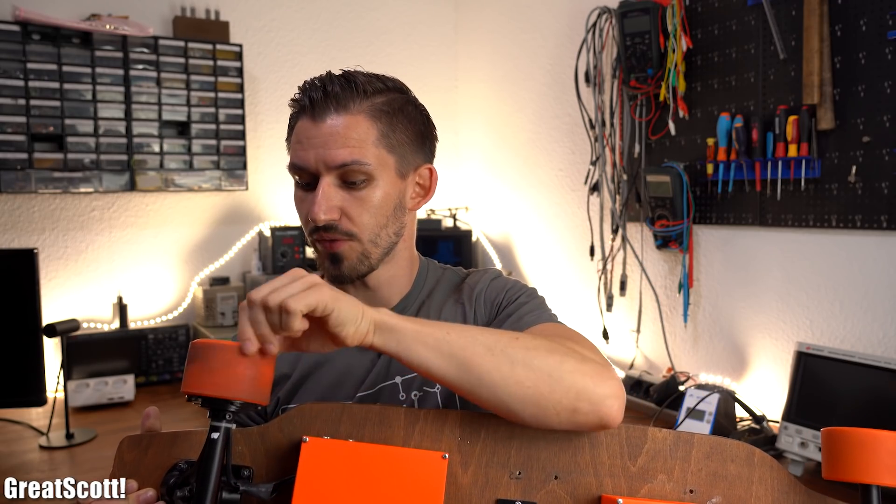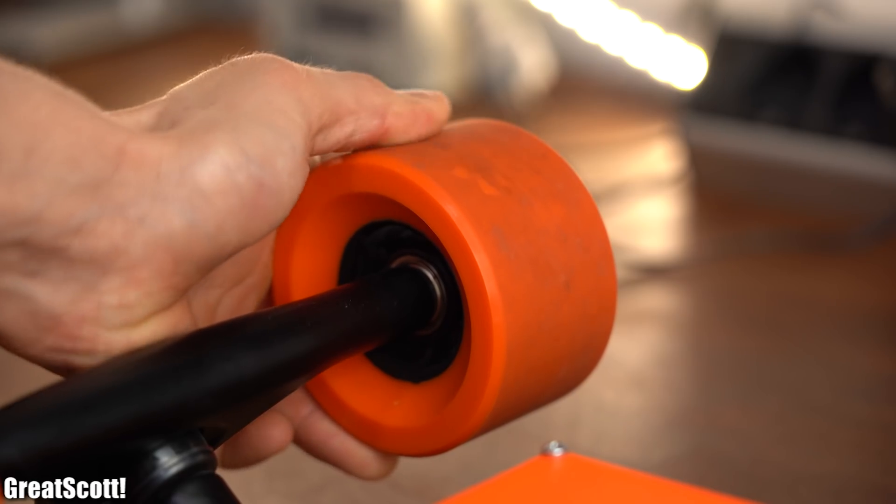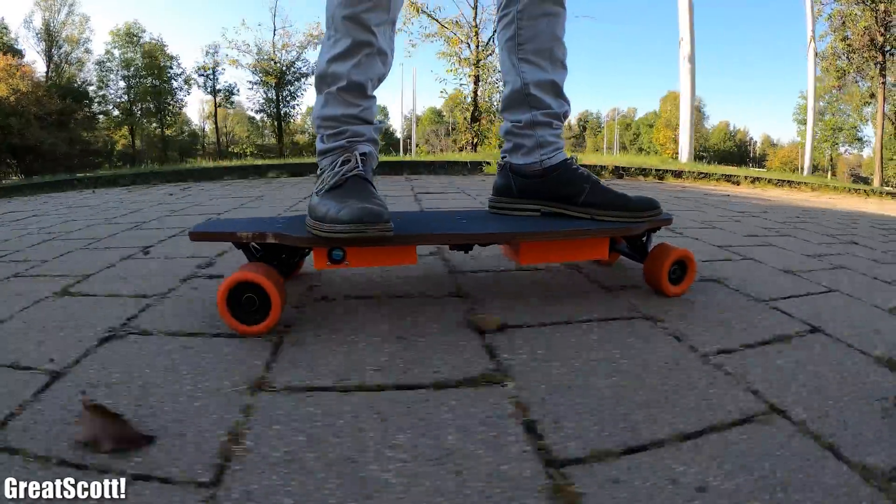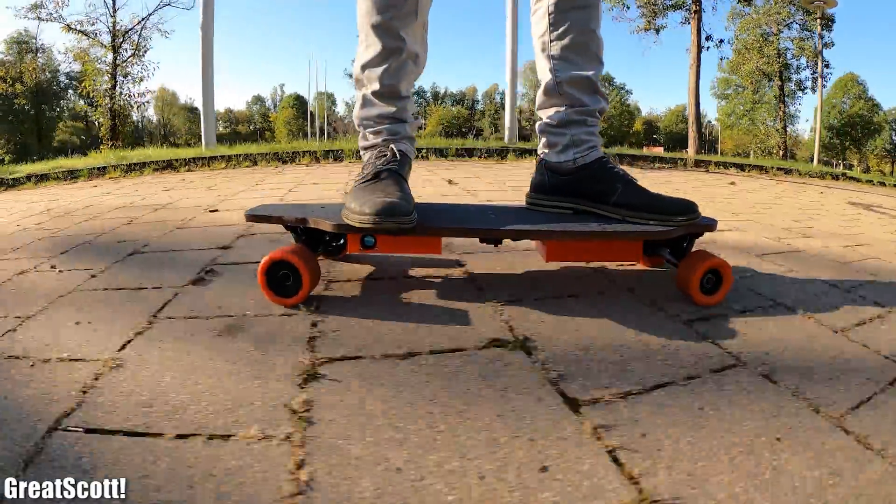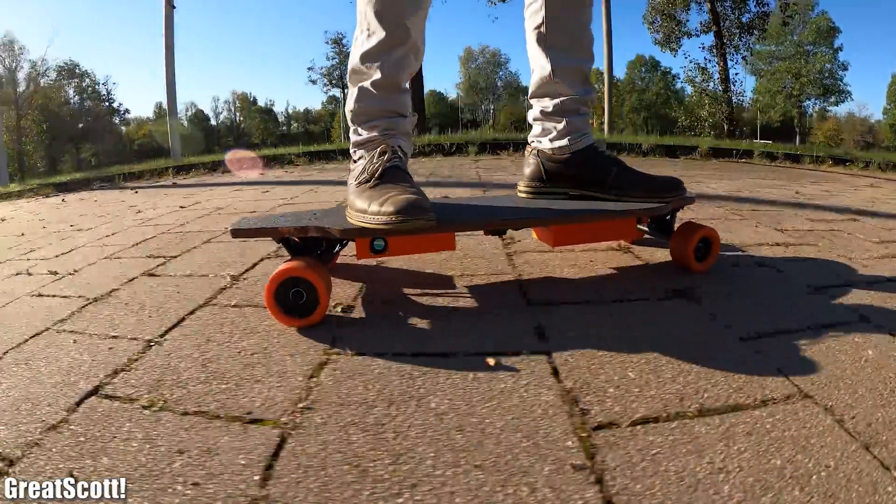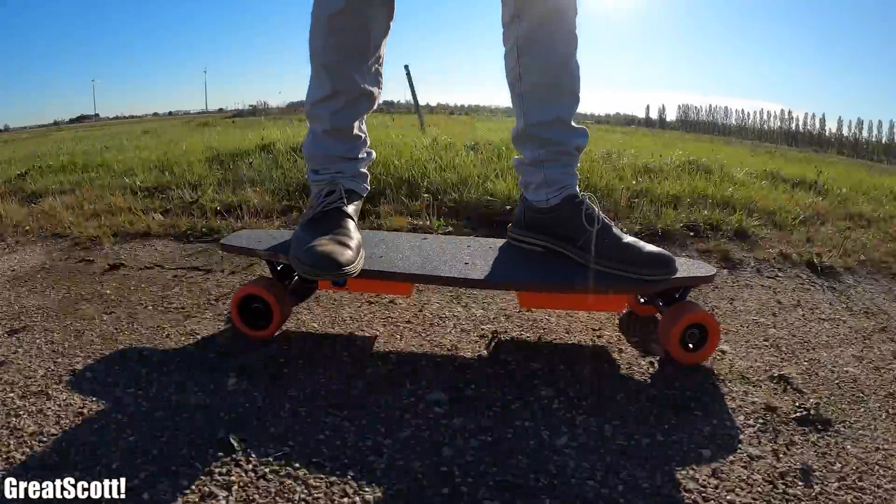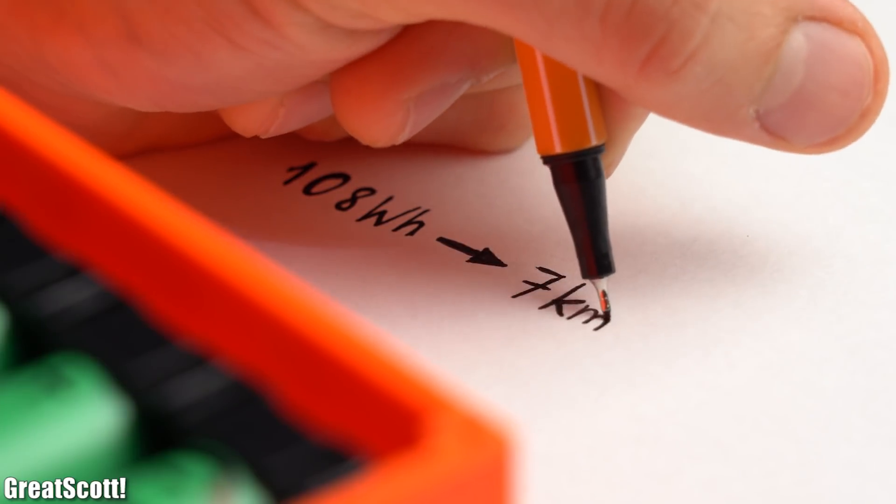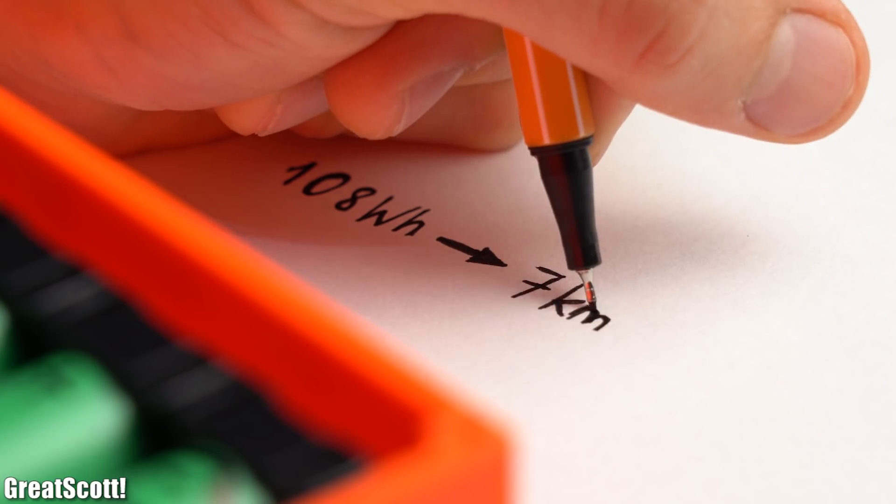For example, the wheels of the board are made of pretty stiff plastic which is also rather smooth. The consequence is that the wheels do not offer lots of springiness against bumpy roads and they also do not feature lots of grip for off-road tours. Another example is the rather low capacity battery pack with 108 Wh that can power the board with me on top for only around seven kilometers.